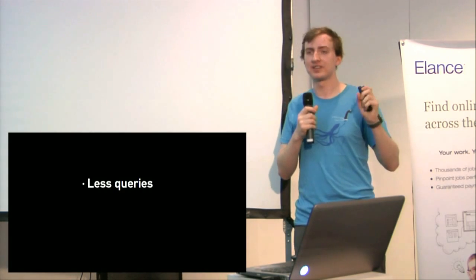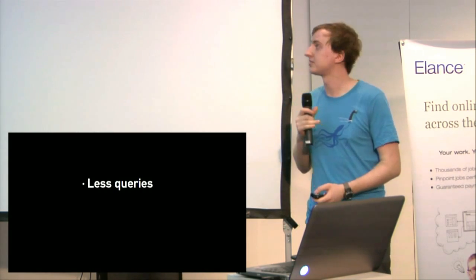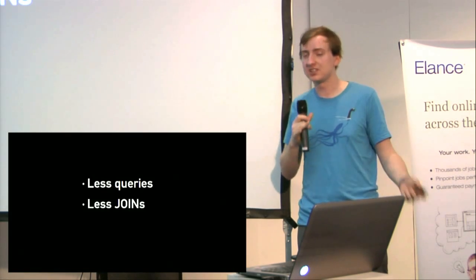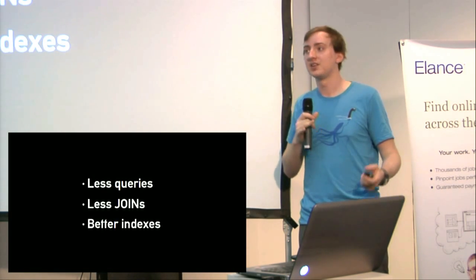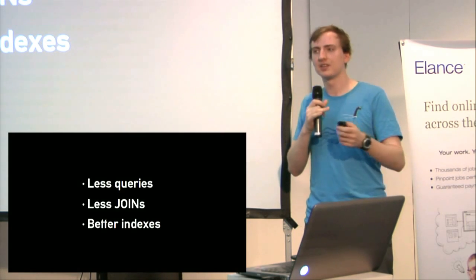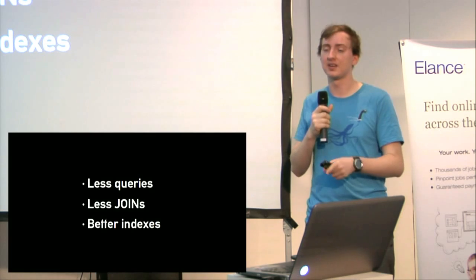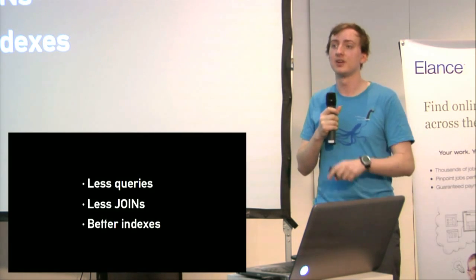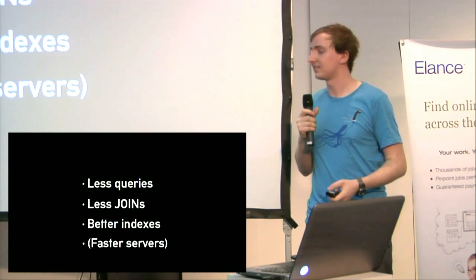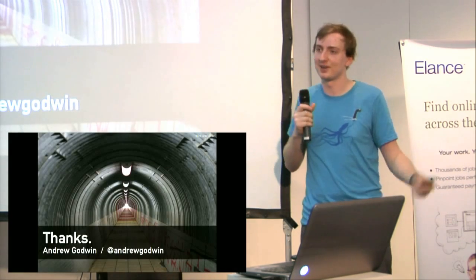To summarize: you want fewer queries because that's naturally faster. You want fewer joins because they're slow — try to denormalize to get that better. You want better indexes, so analyze your queries and look at the indexes. Don't add too many indexes because writing becomes very slow — only add indexes for things you really need. And finally, sometimes just buy faster servers. That's good enough. Thank you very much.